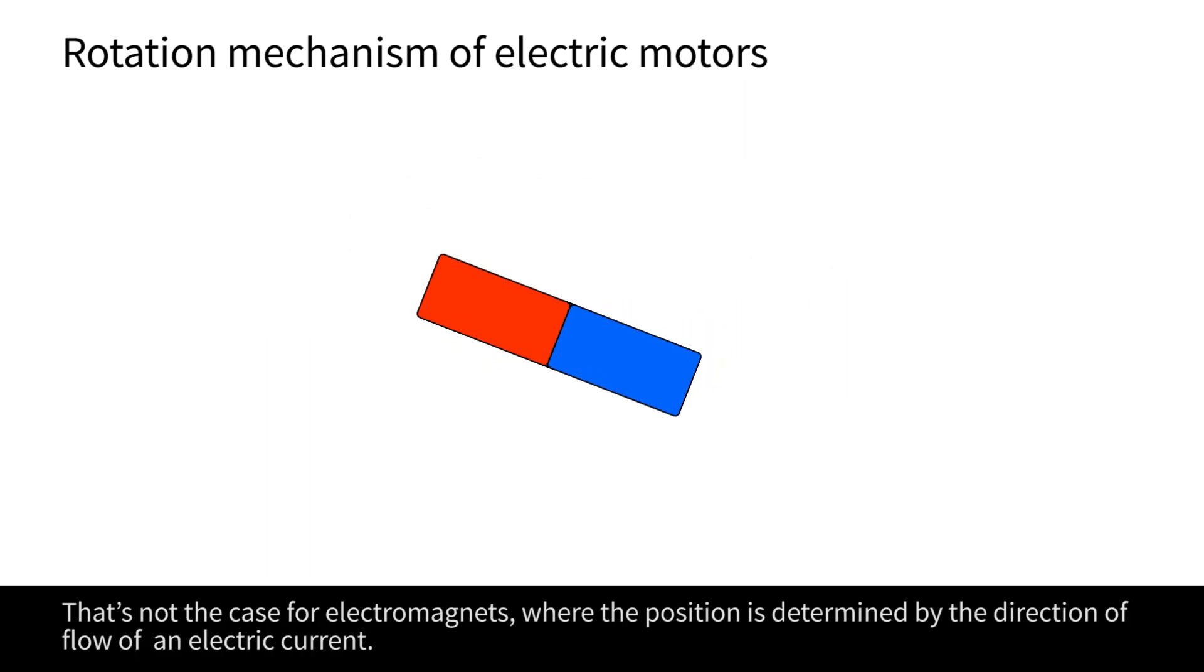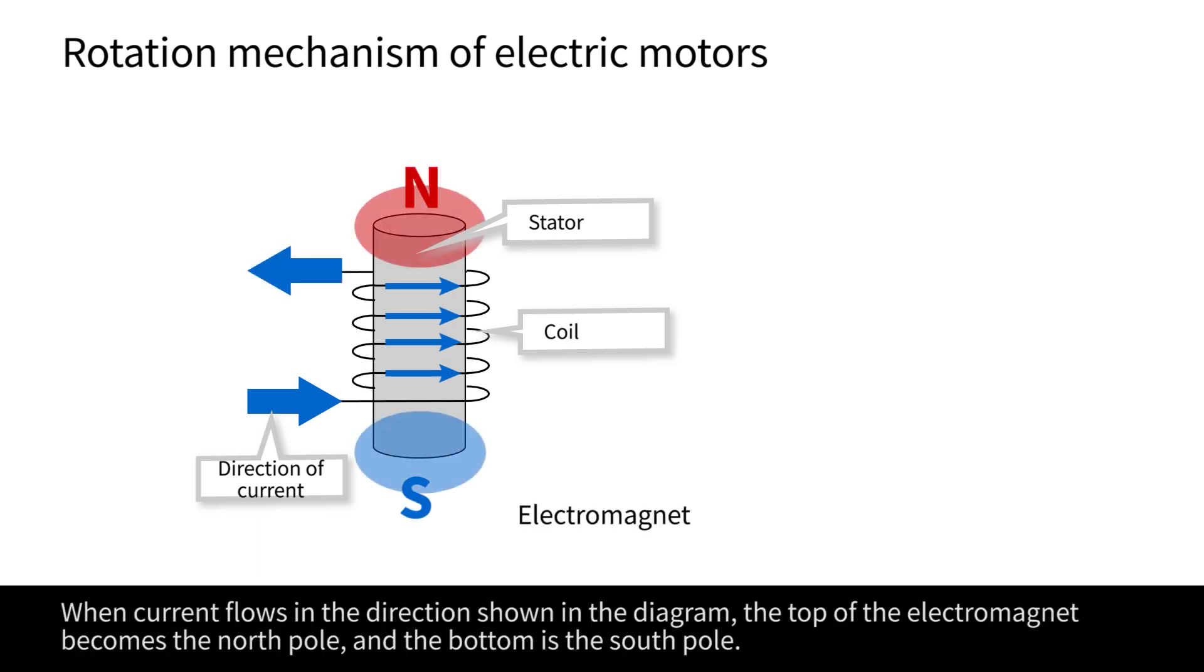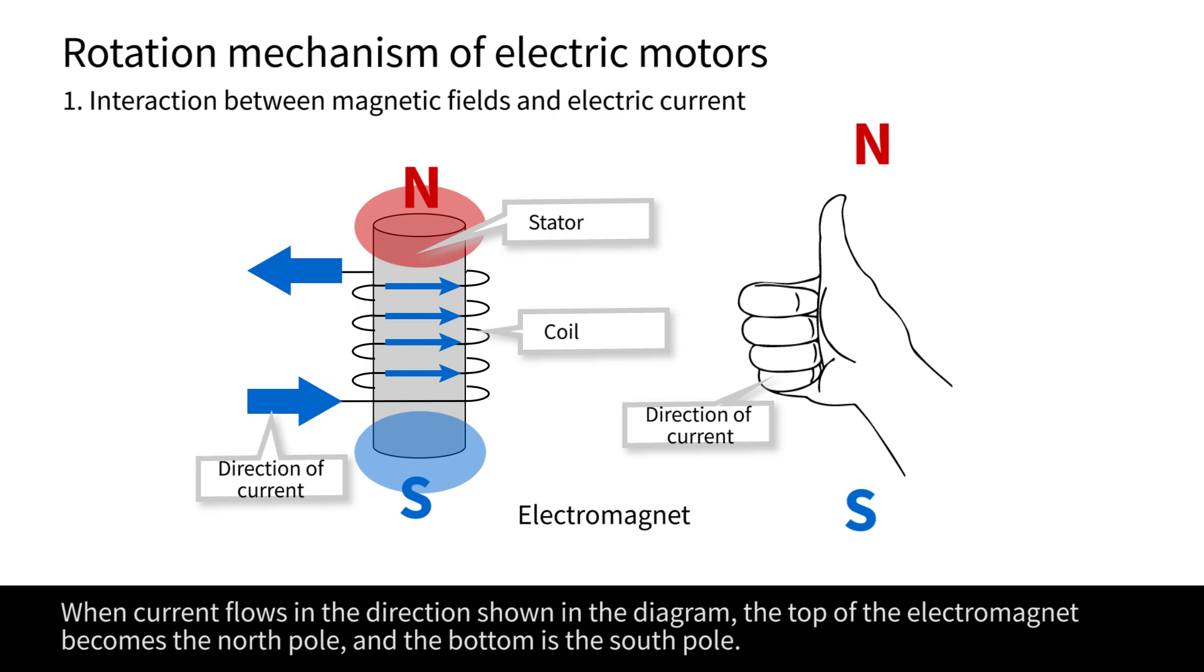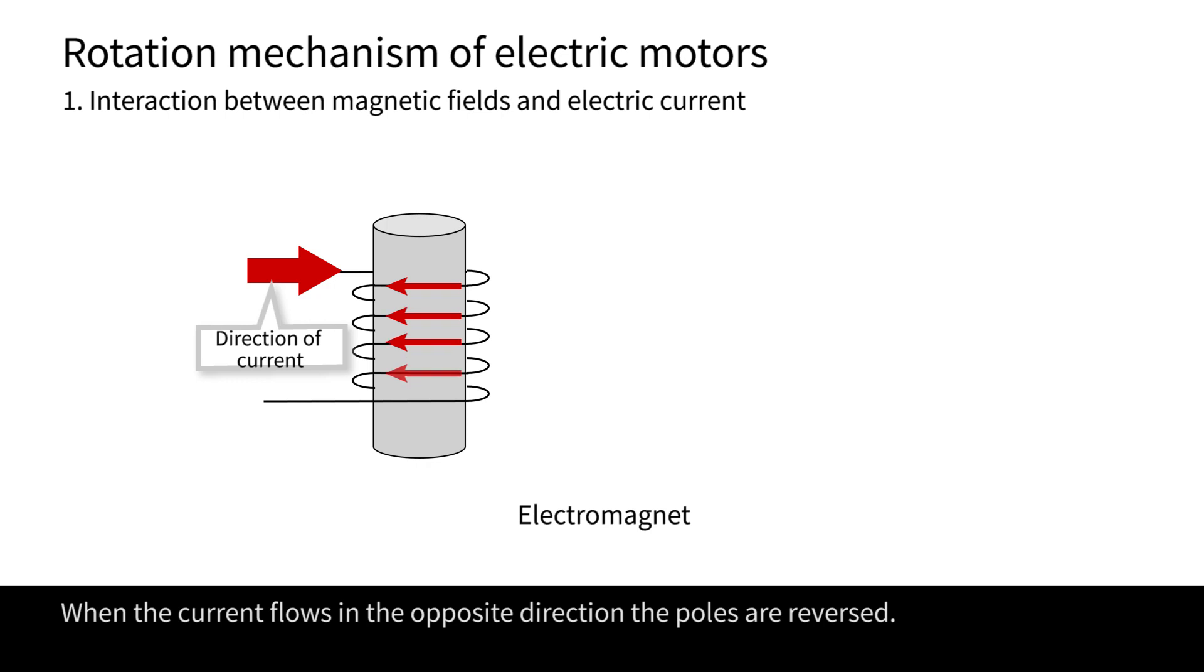That's not the case for electromagnets, where the position is determined by the direction of flow of an electric current. When current flows in the direction shown in the diagram, the top of the electromagnet becomes the north pole and the bottom is the south pole. When the current flows in the opposite direction, the poles are reversed.